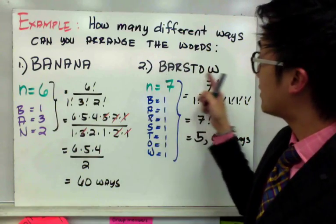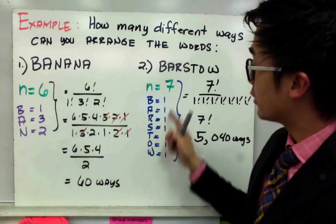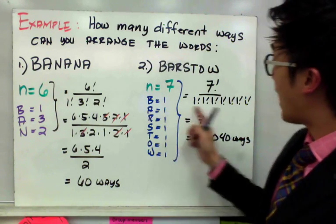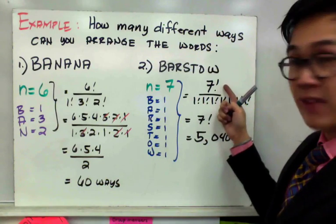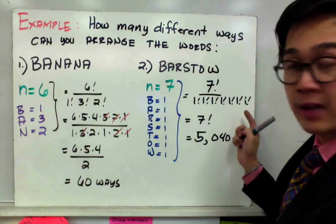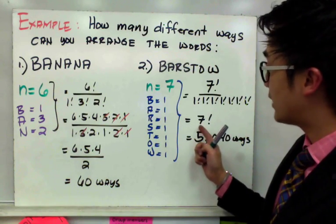Now, nothing repeats or no letter is repeating in the word barstow, so that means all of them will just be 1. So if we set it up with our formula, we have 7 factorial all over. All of them are 1, and when you multiply all the numbers by 1, it's just going to be 1, so you will end up with 7 factorial.